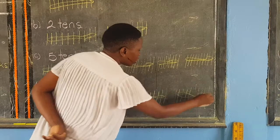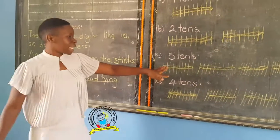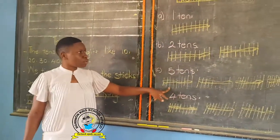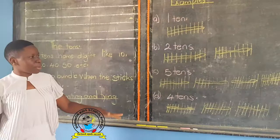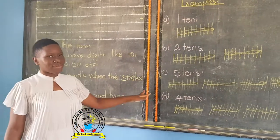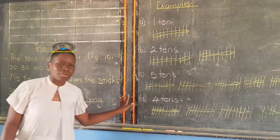So, with bundles of tens, there must be ten sticks. With ones, we draw the exact number of sticks for the given number. Thank you very much.